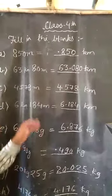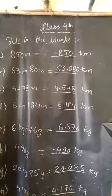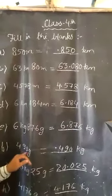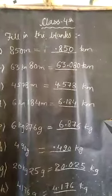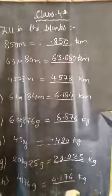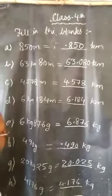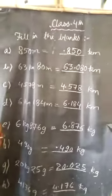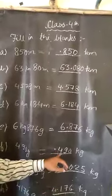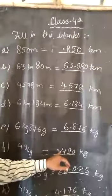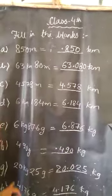After dividing by 1000, here after dividing 490, it will be 0.490. So our fill up will be 0.490 kg.